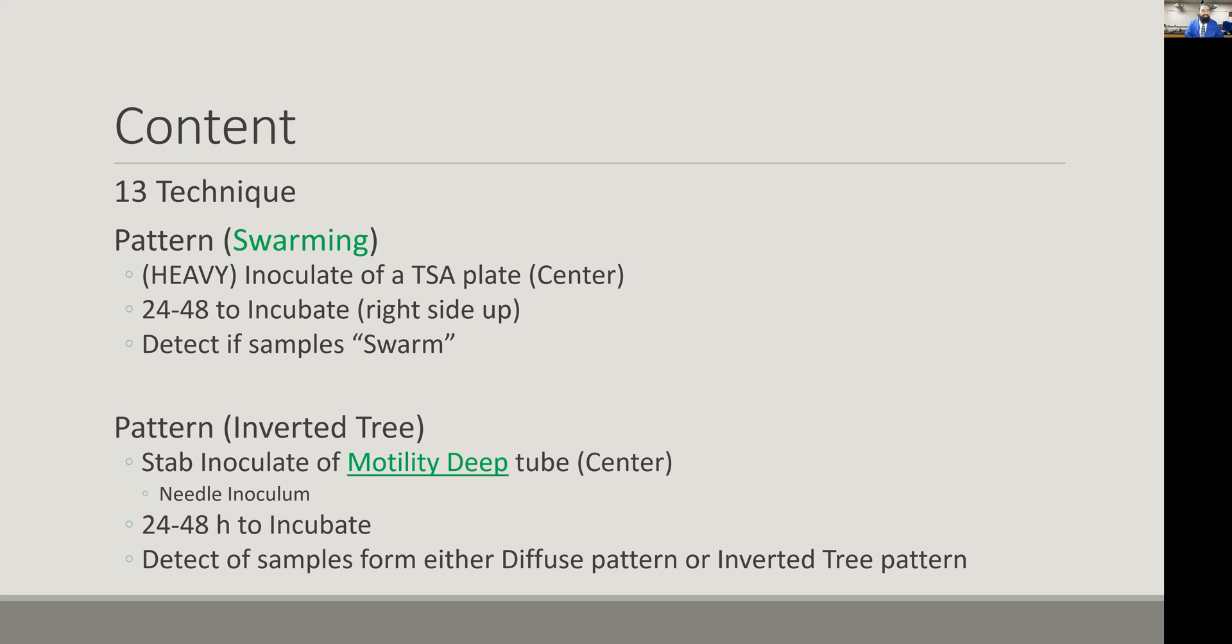The second portion of lab 13 uses a very unique type of medium designed to observe motility in a tube called the motility deep. These are slightly shorter tubes with lighter media containing a specific color marker. When the organism grows and consumes it, it reflects a red color, so we can see where inoculation occurs. For this, we use a needle inoculum instead of a loop—it's a flat needle missing the circle at the end.